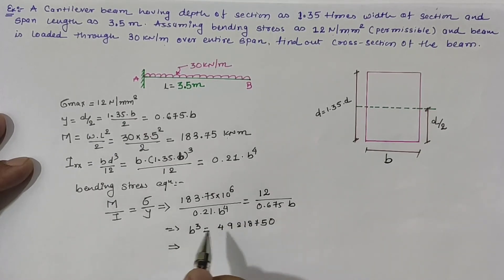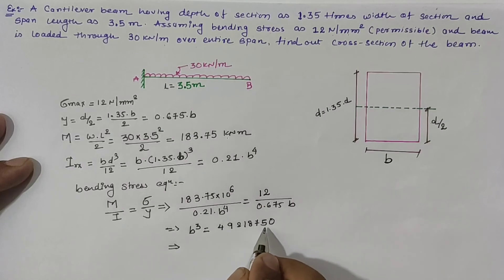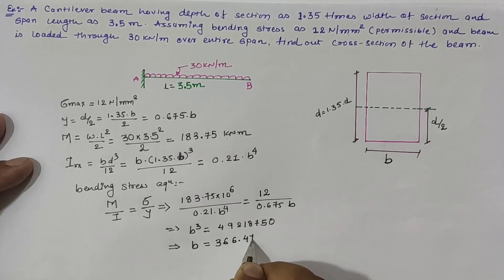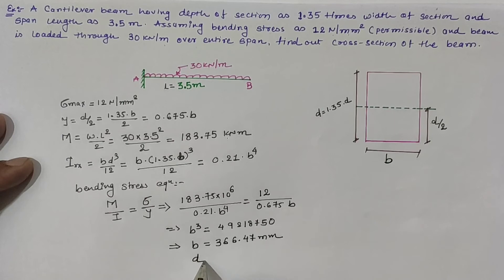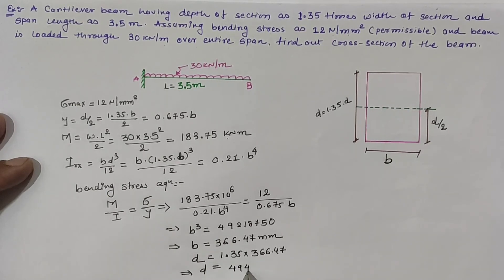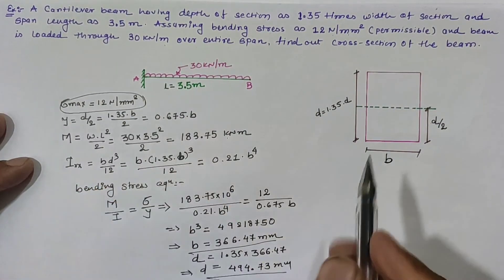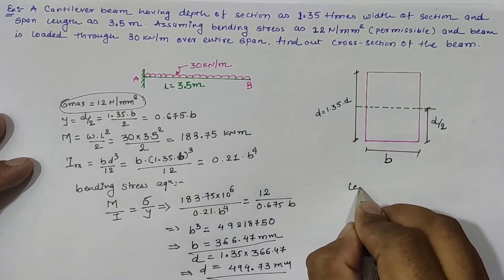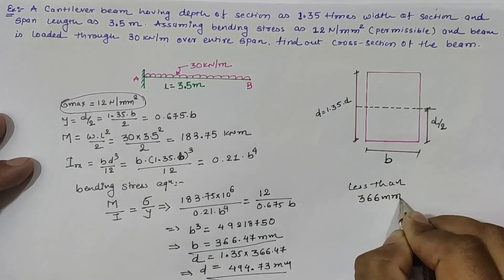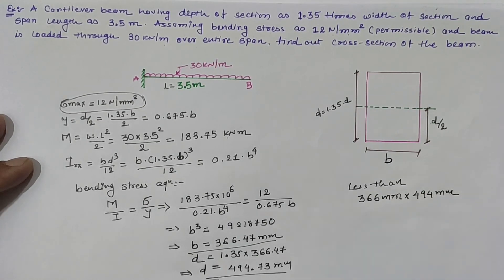Taking the cube root of 49,218,750, the base width b equals 366.47 mm. The depth d equals 1.35 times 366.47, which gives 494.73 mm. For sigma maximum of 12 Newton per mm square, the required cross-section must be at most 366 mm wide and 494 mm deep.